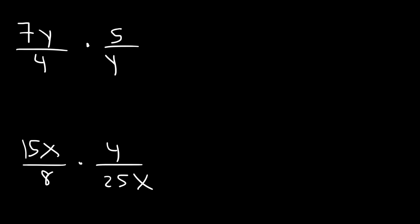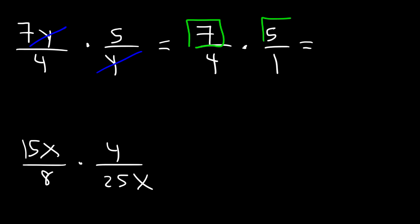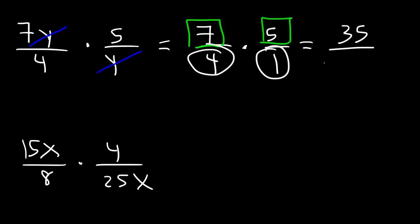Just like the last example, we can cancel a y variable, so we're left with 7 divided by 4 times 5 over 1. Then just multiply across. If we multiply 7 and 5, that's going to give us 35. And if we multiply 4 and 1, that's simply 4. So the answer for the first example is 35 over 4.